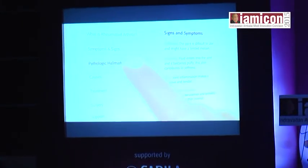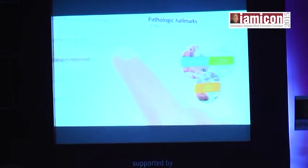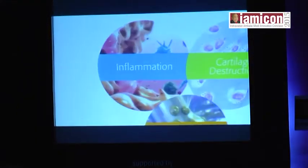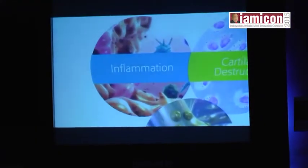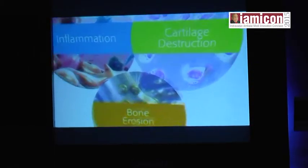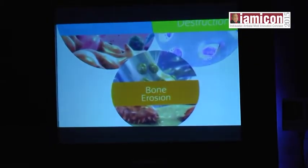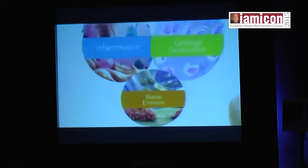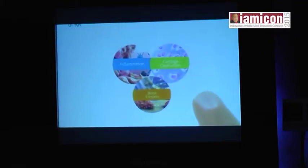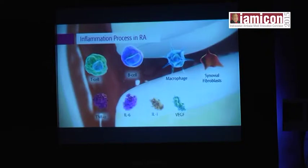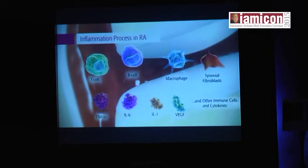The pathologic hallmarks of rheumatoid arthritis include inflammation of the joints, particularly the small joints in the hands, wrists, and feet, accompanied by cartilage destruction and bone erosion. Underlying inflammation leads to many of the characteristic signs and symptoms of RA such as pain and swelling of the joints. Inflammation results from abnormal propagation and activation of many types of immune cells.